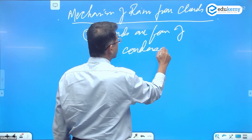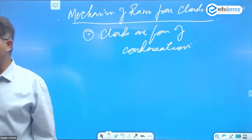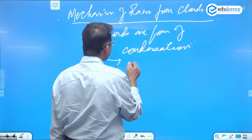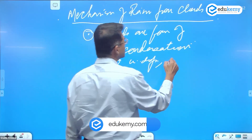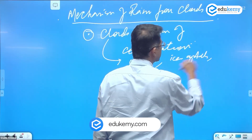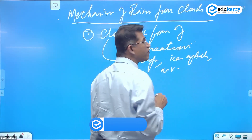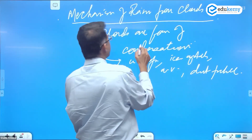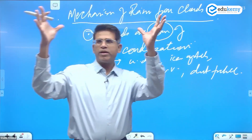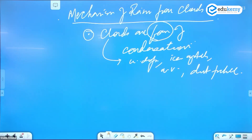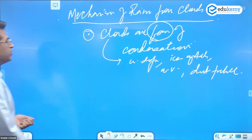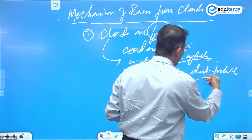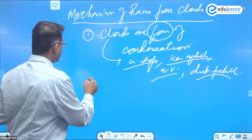Clouds are one form of condensation. Clouds have water droplets, some clouds can have ice crystals, clouds will also have water vapor, plus clouds can have dust particles. So a cloud has some shape and physical existence — water droplets, ice crystals, water vapor, and dust particles.